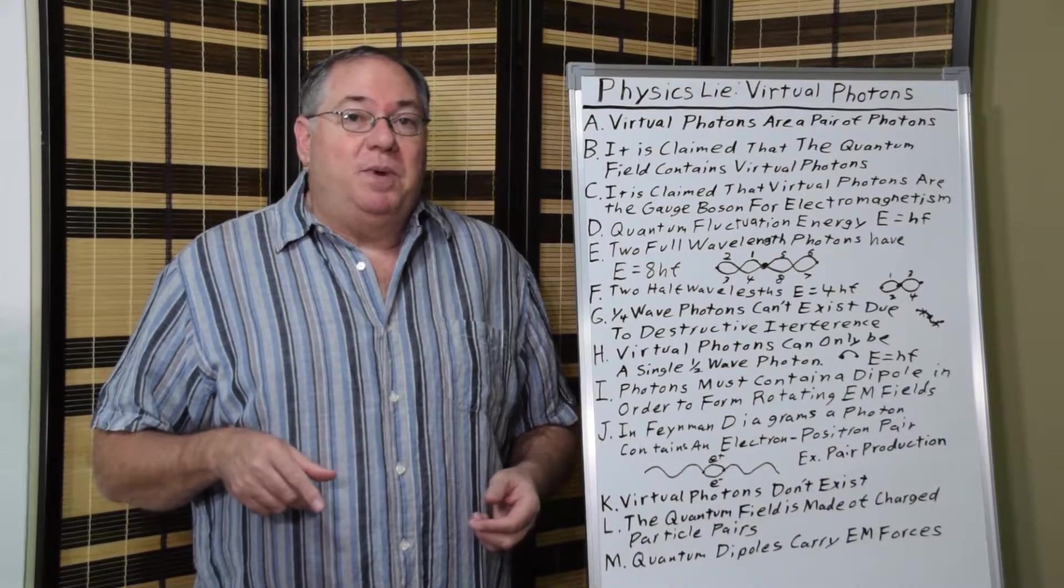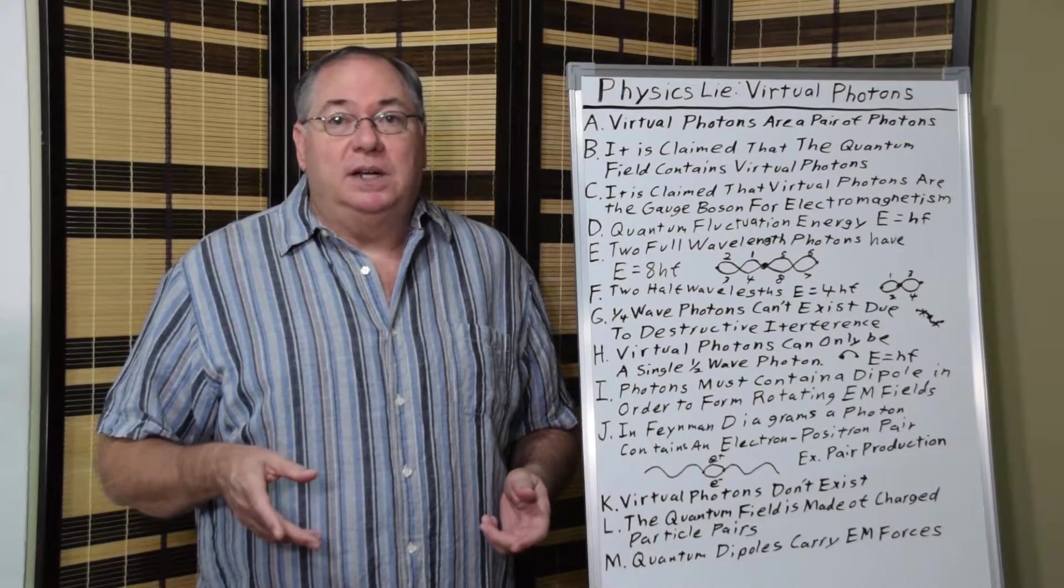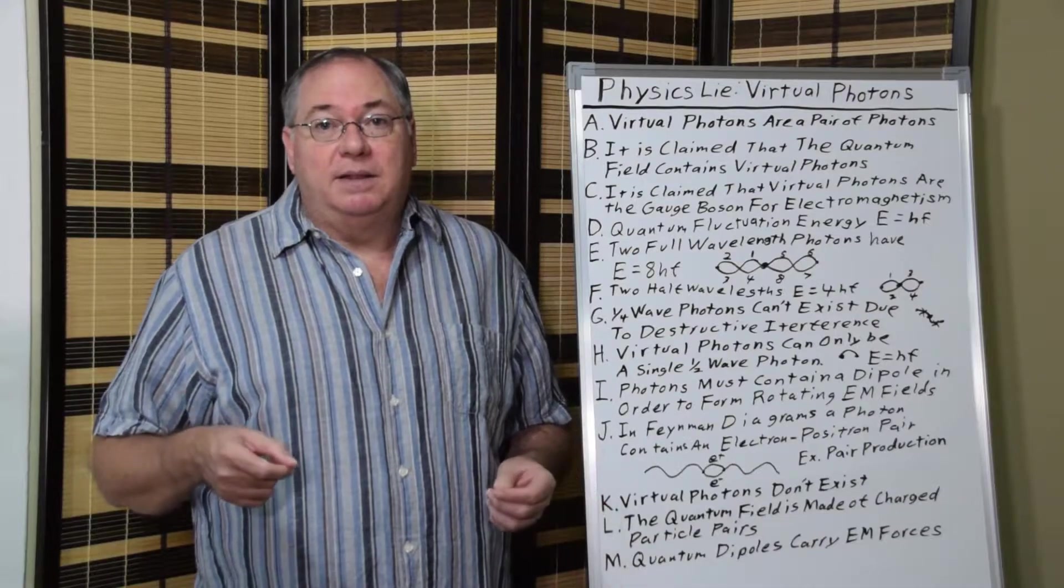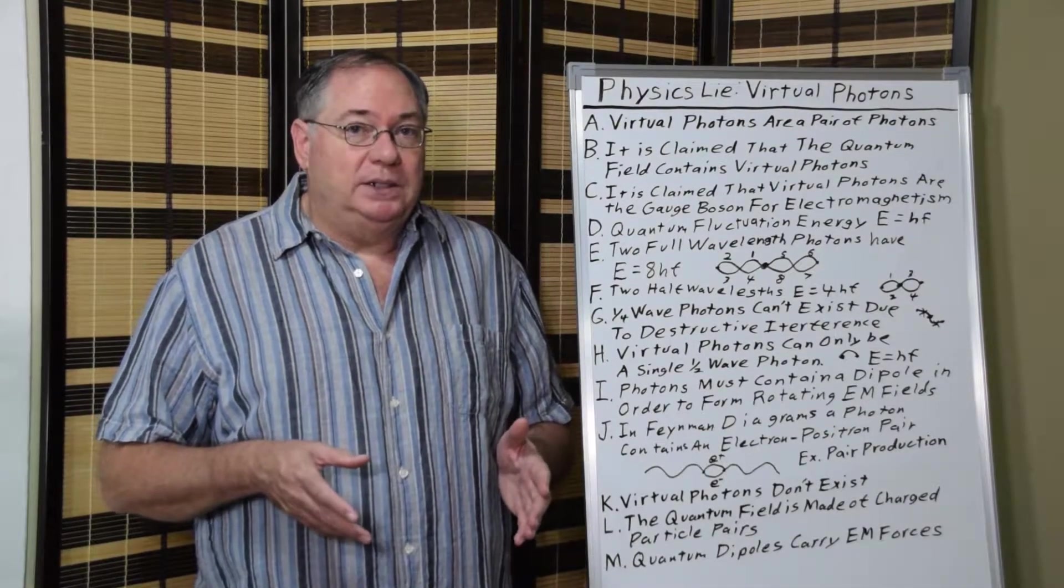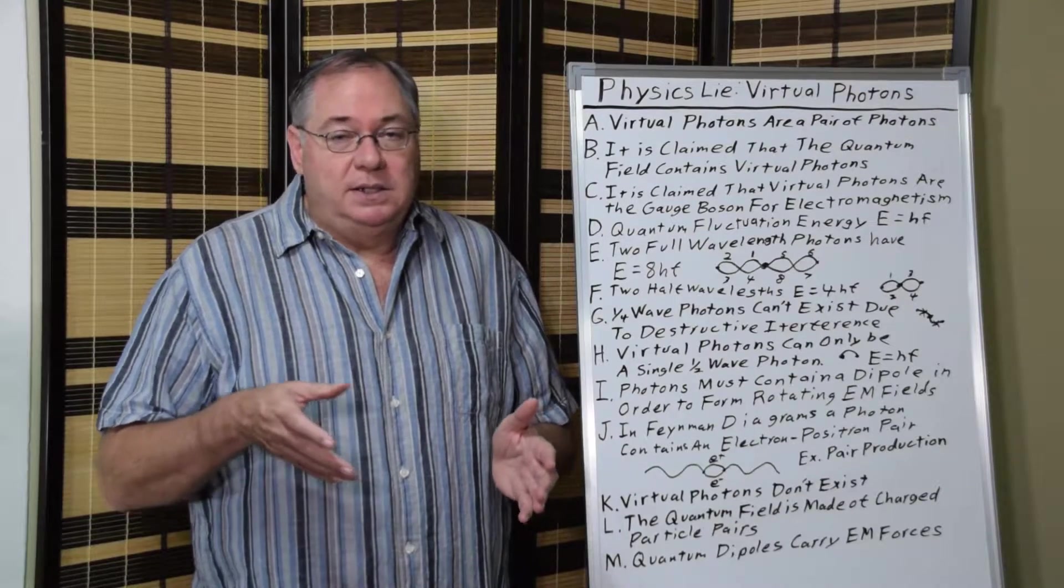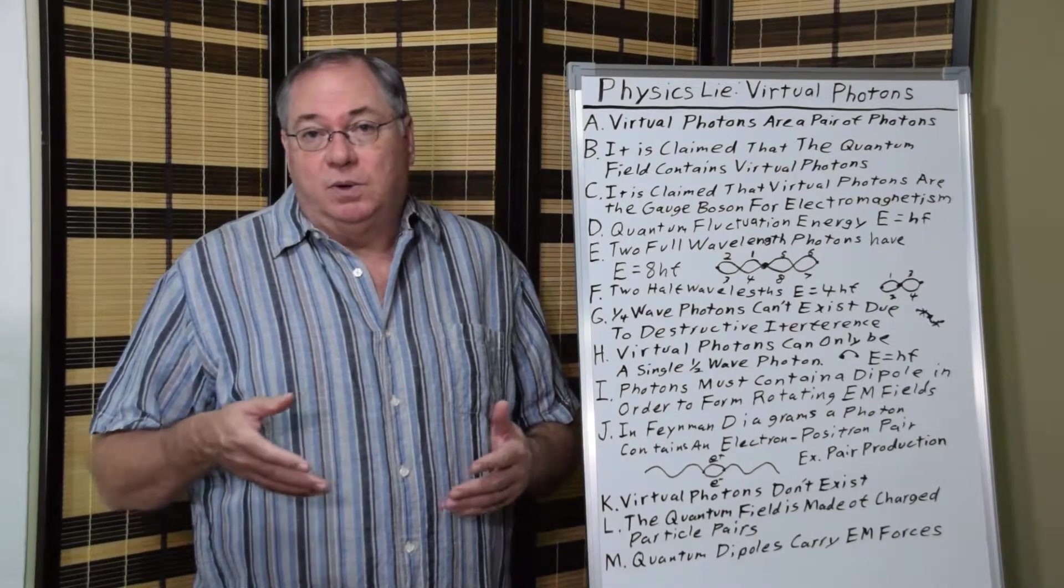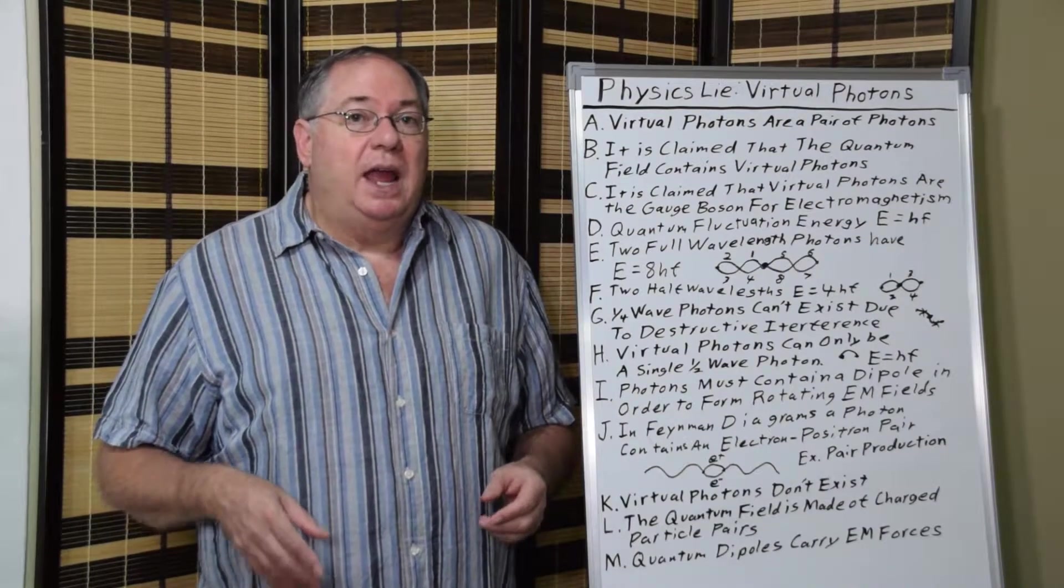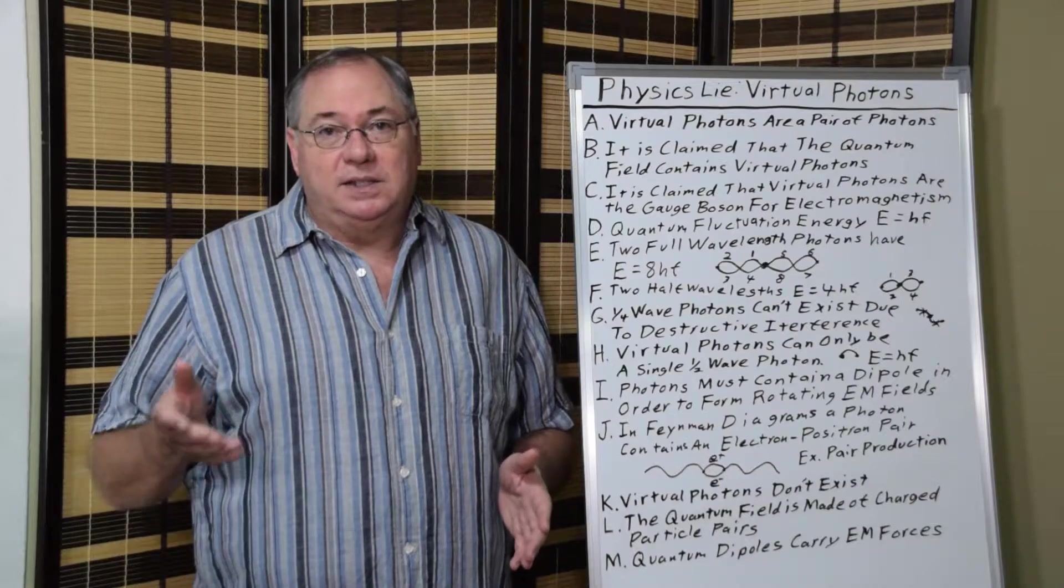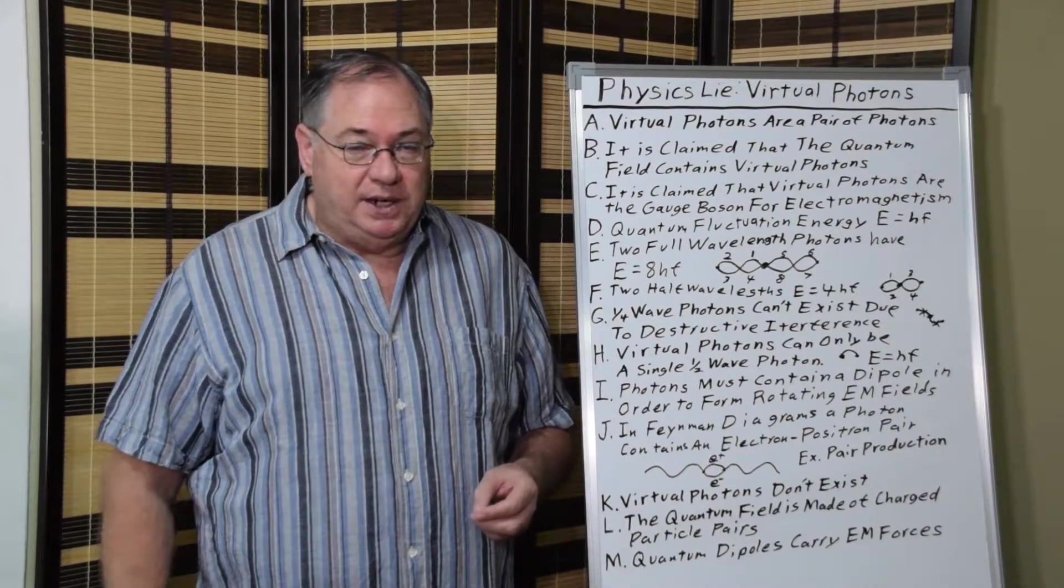Now, the reason we have problems with virtual photons, in a theoretical sense, is because a quantum fluctuation, under Planck's laws for the zero-point energy oscillators, energy equals Planck's constant times frequency, E equals HF.